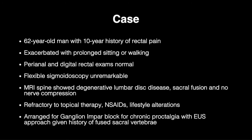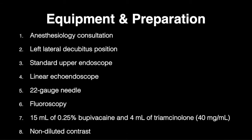We present the case of a 62-year-old man with a 10-year history of rectal pain. The pain worsened with prolonged sitting or standing, was deep to his perineal region, and described as a fluctuating dull and sharp pain. Perianal and digital rectal exams and flexible sigmoidoscopy were normal. MRI spine demonstrated degenerative lumbar disc disease and sacral fusion, for which the percutaneous approach was not an option.